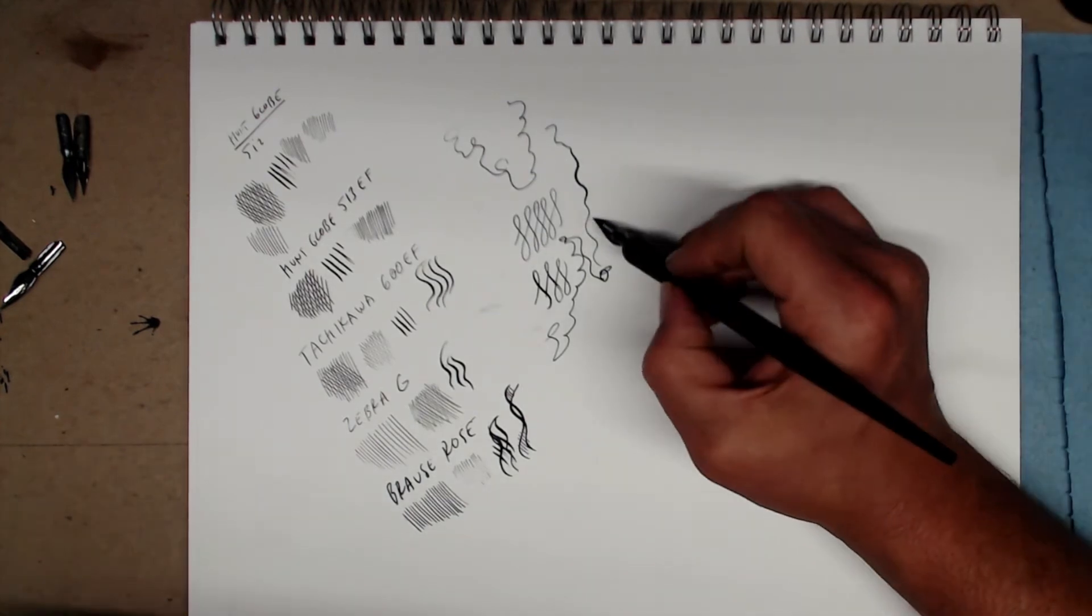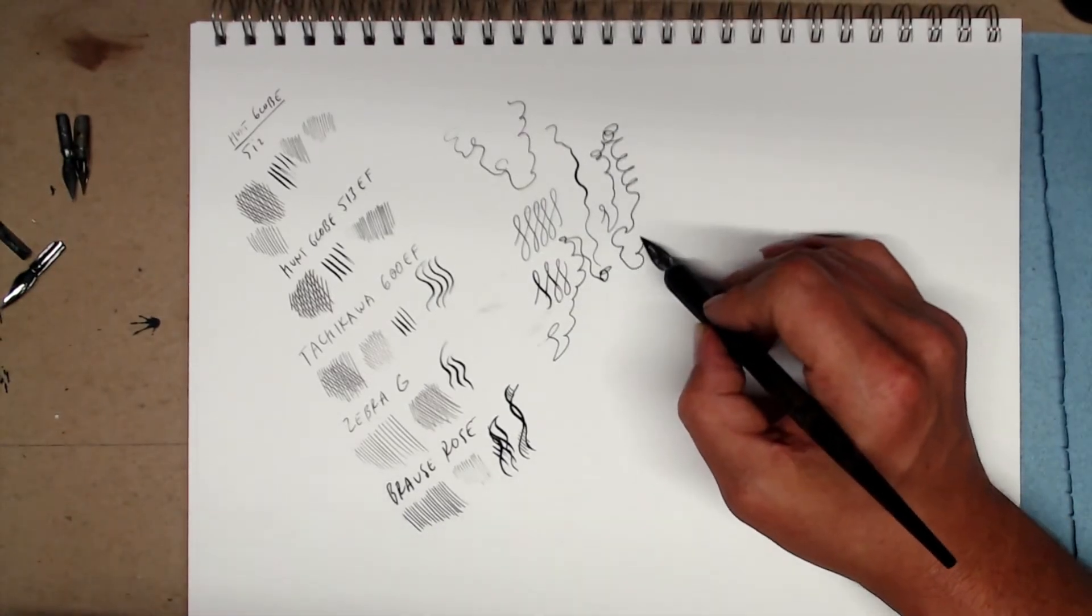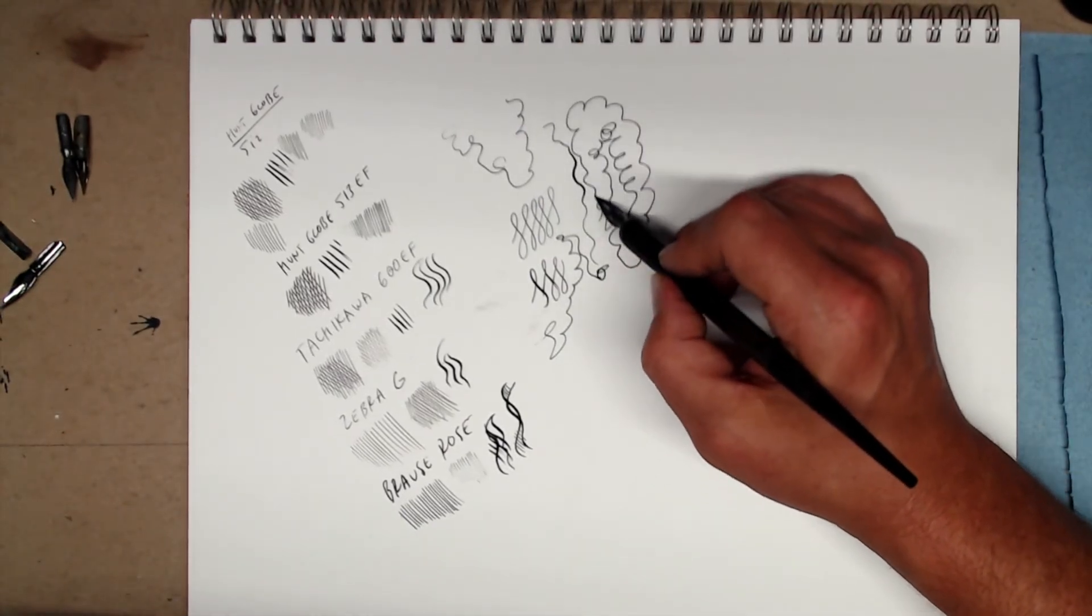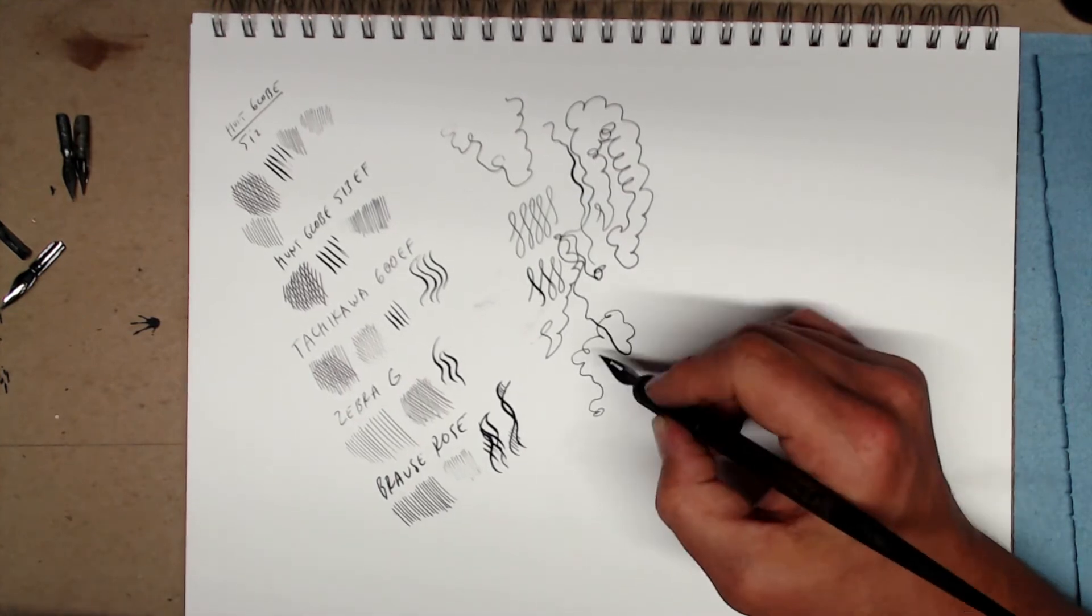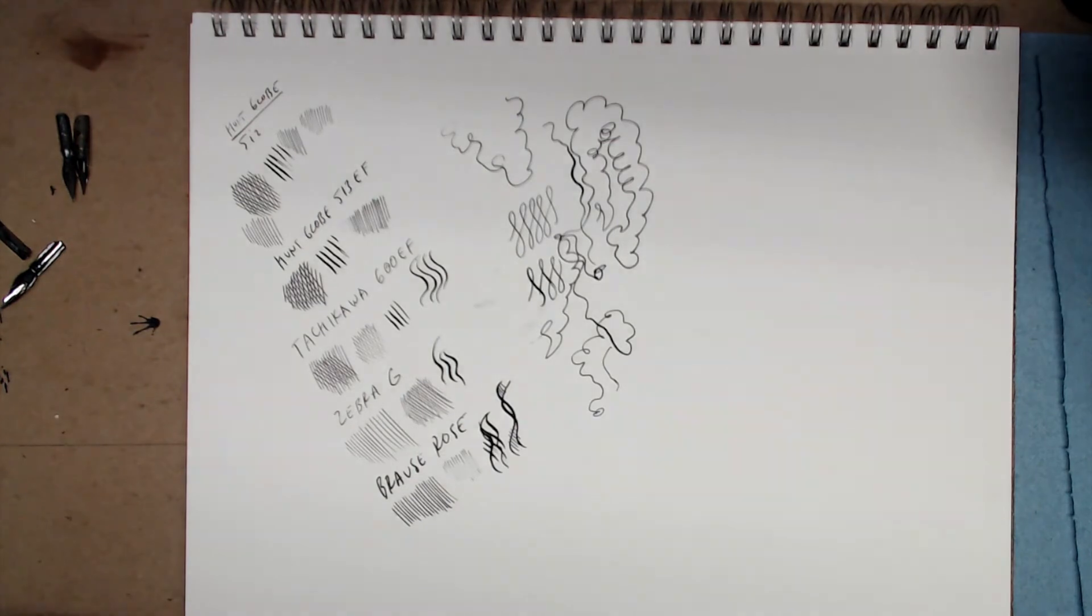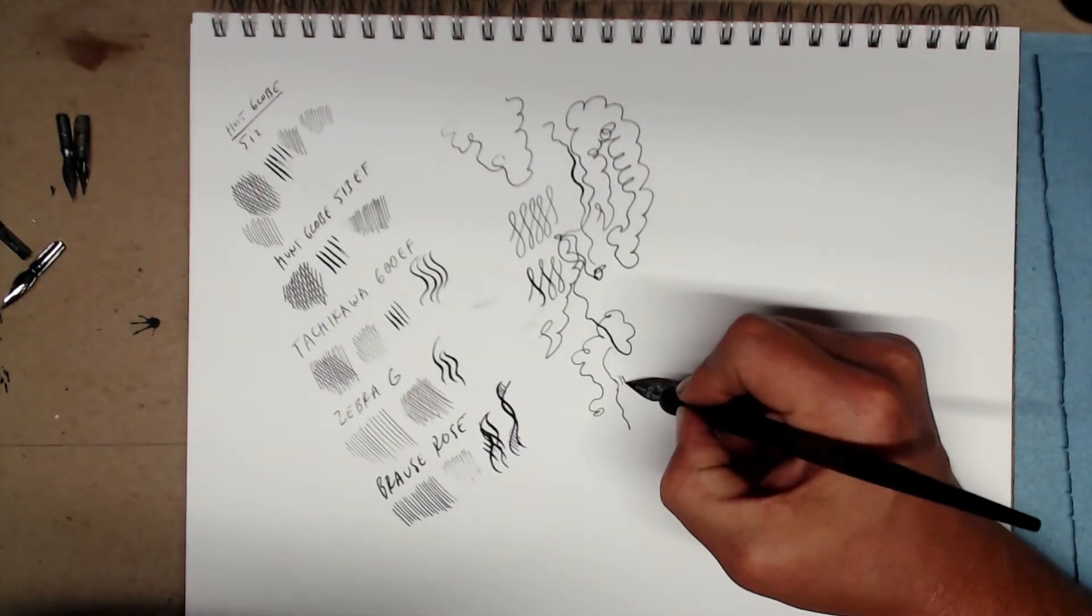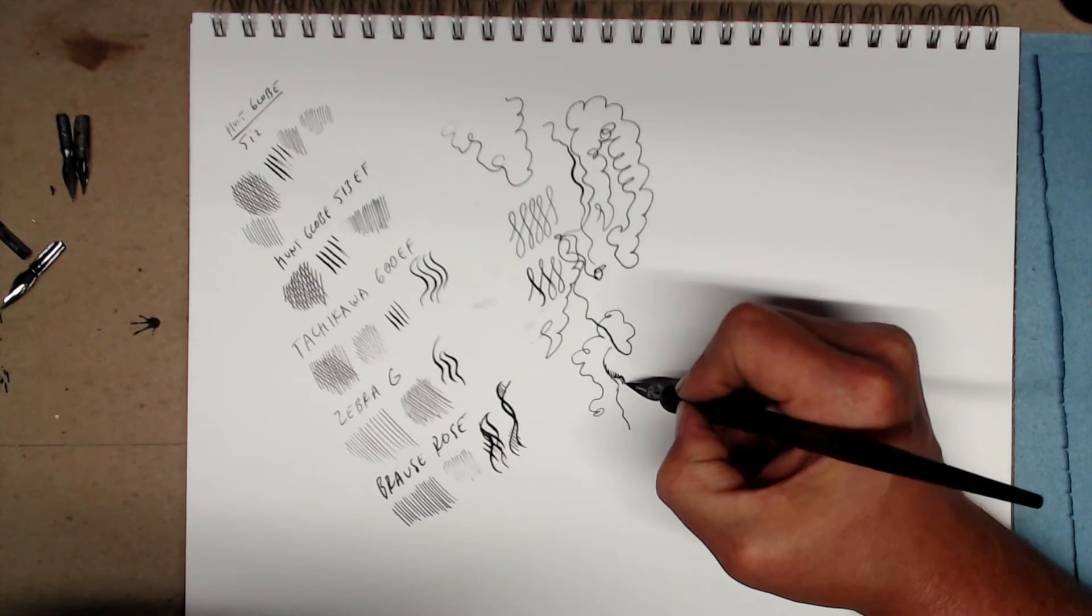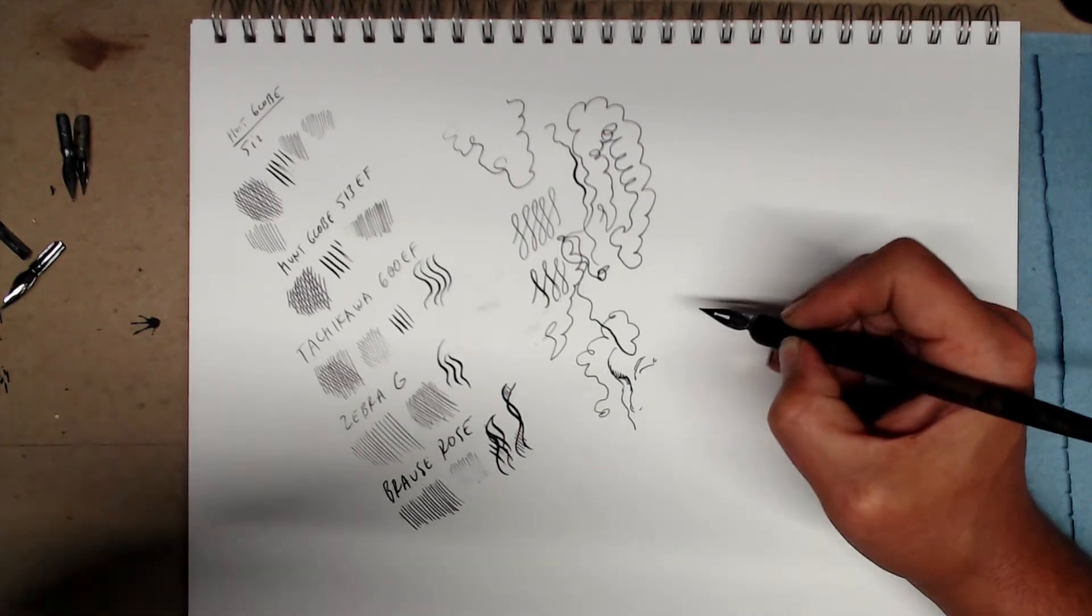Okay, so that's exercise number one. Just do a bunch of doodles. Use either the 512 or the 513EF. Again, just get acclimated to putting down lines. You can do this while talking on the phone. Draw little faces. Just get the hang of using the pen, holding it correctly.